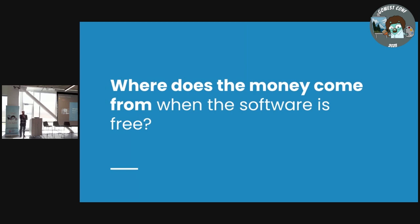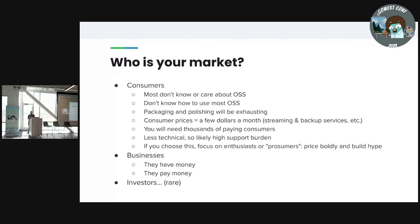One question you might have is: I still need to eat, sleep, and pay the bills — where do I get the money if the software is free? Someone sat down next to me a few weeks ago and asked what I do for work, and I told them I sell free software. There are three main sectors: consumers, businesses, and investors. Investors in open source is kind of rare and very stressful. Consumers and businesses are typically going to be your market for raising funds.